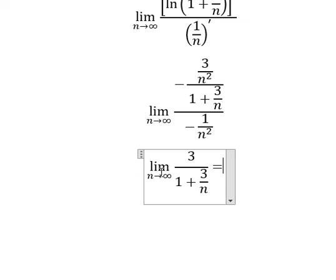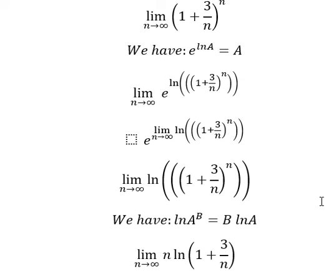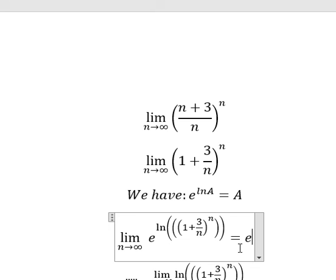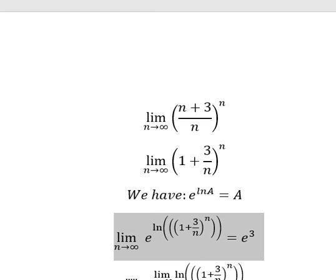Now we need to simplify, so we have three over one plus three over n. When n approaches positive infinity, this one gives zero, so we have number three. And now we go back and get the final answer. That is the end — thank you for watching.